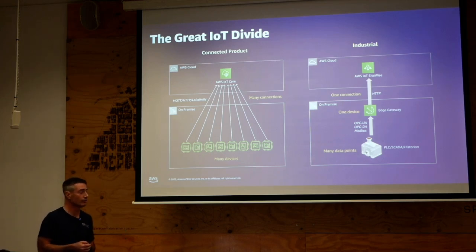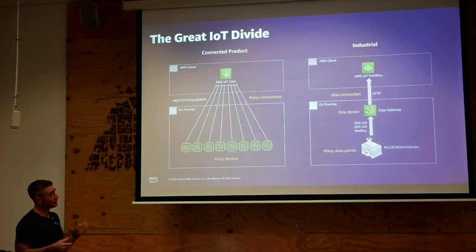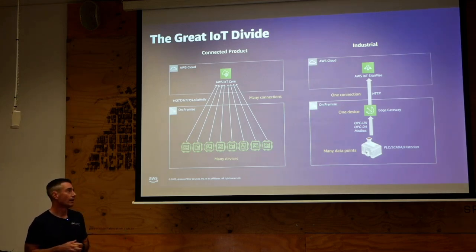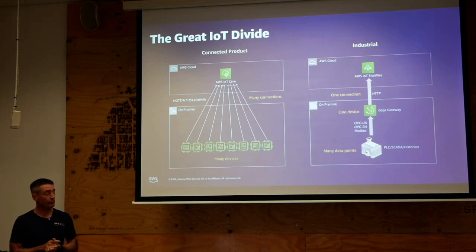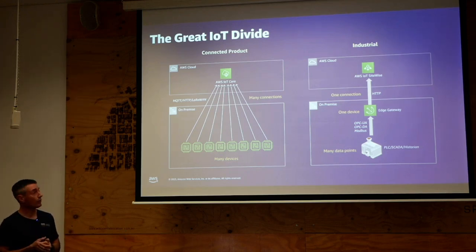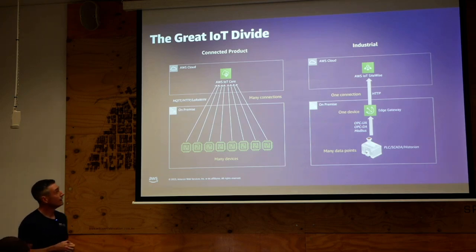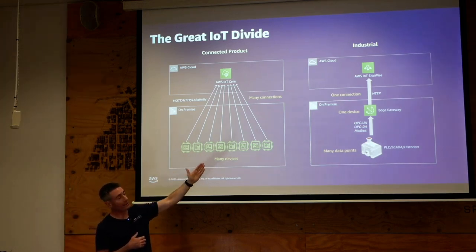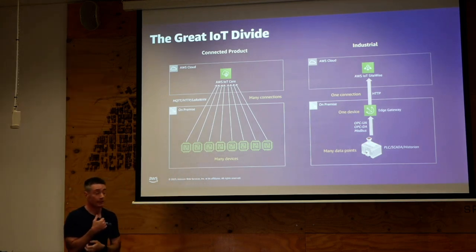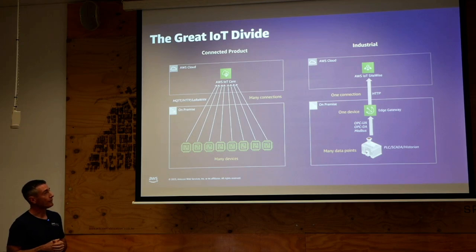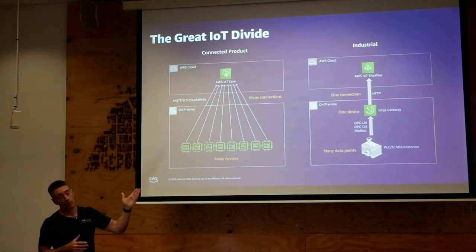In the industrial workload, by contrast, we're ingesting from industrial equipment — PLCs, SCADA, Historian — with industrial protocols like OPC UA. Typically we need something at the edge, an industrial gateway, to aggregate data from those different industrial sources and do protocol translation into something suitable for the cloud. On the connected product side you have many devices with many independent connections; on the industrial side you end up with essentially a single device and a single fat data pipe to the cloud. In the AWS context, AWS IoT SiteWise is the service purpose-built for this kind of industrial ingestion, with the help of a gateway at the edge.